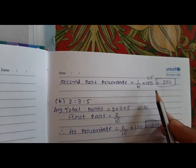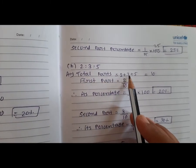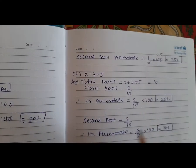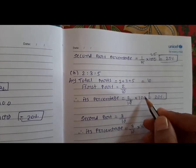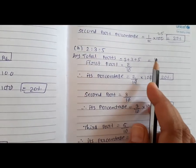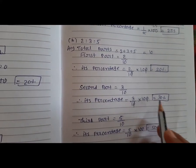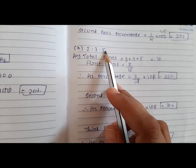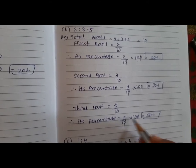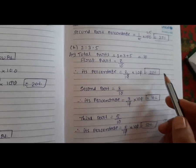Second part percentage = 1 upon 4 multiply 100 = 25%. For ratio 2:3:5, total parts = 2 + 3 + 5 = 10. First part percentage = 2 upon 10 multiply 100 = 20%. Second part = 3 upon 10 multiply 100 = 30%. Third part = 5 upon 10 multiply 100 = 50%. Check: 20 + 30 + 50 = 100%. Answer is correct.